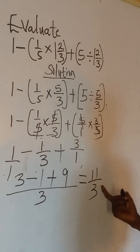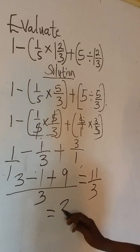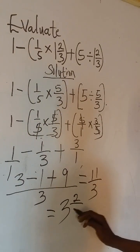So from here now, this is an improper fraction. You convert to a mixed fraction. So 3 in 11 is 3, 2 over 3.